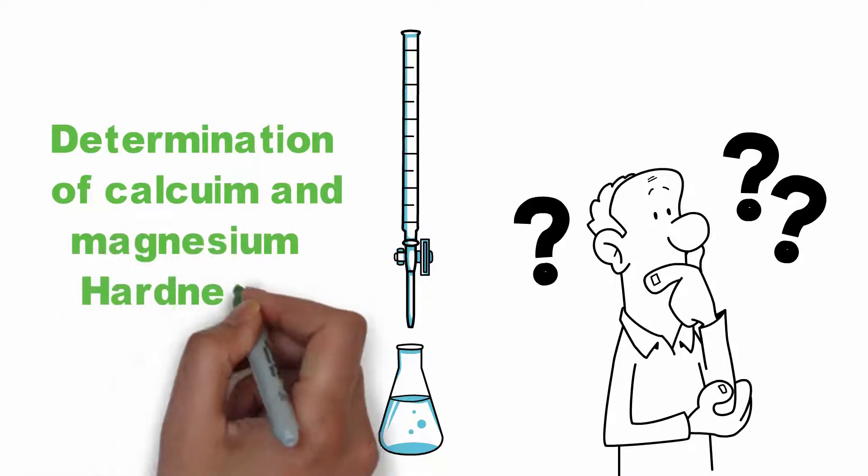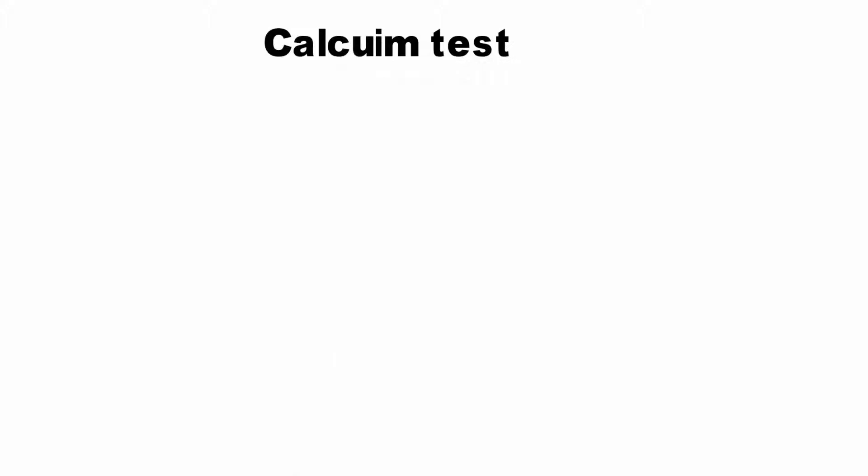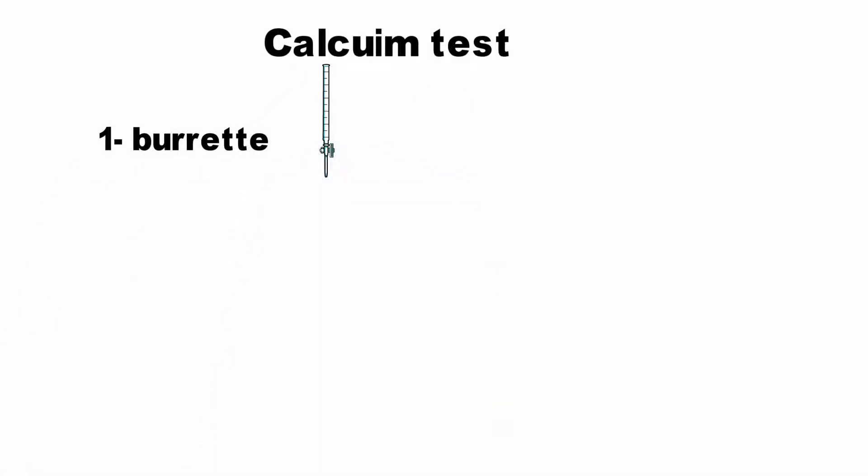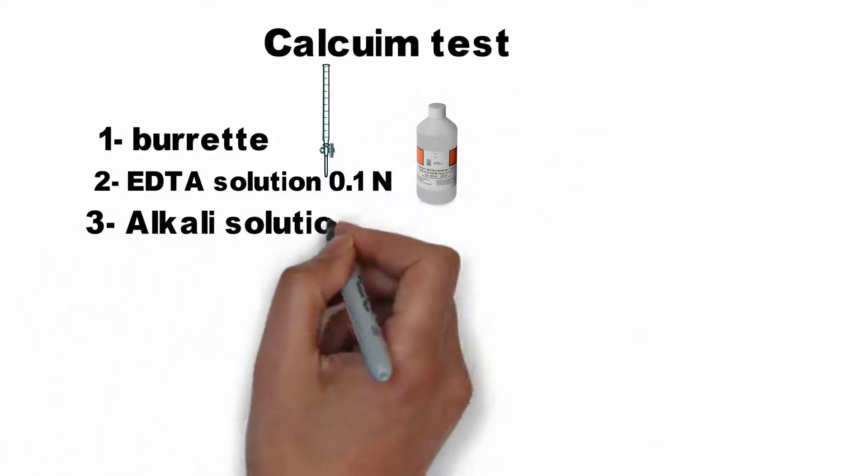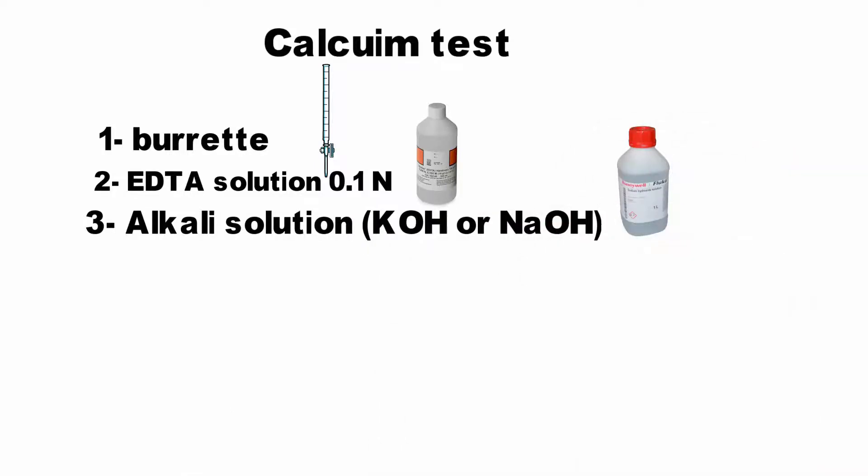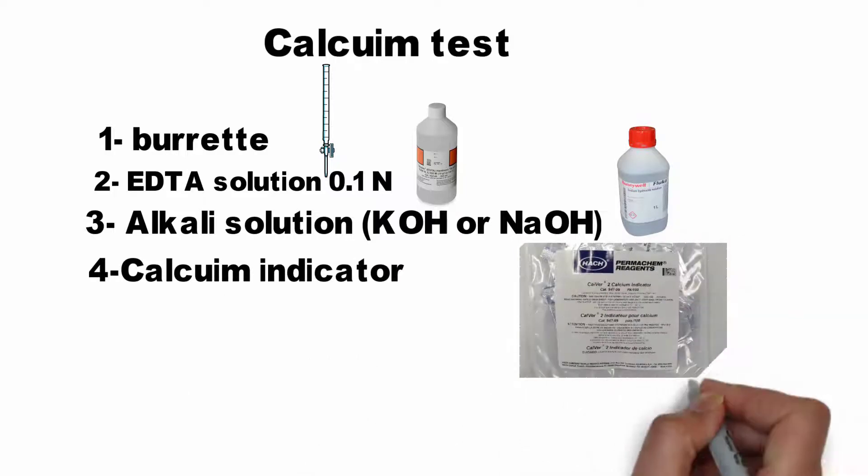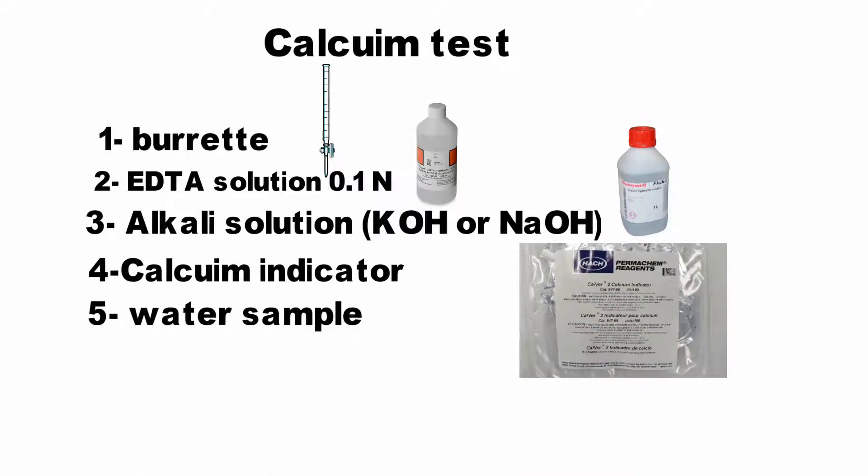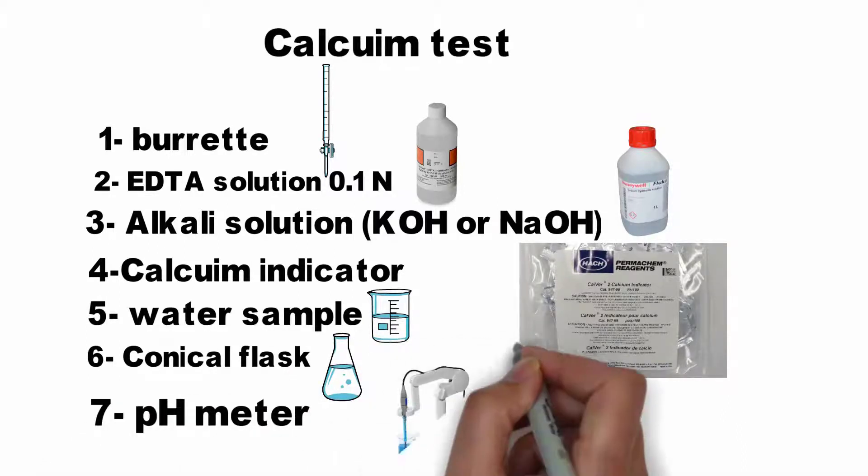To start the calcium test, you will need a burette, an EDTA solution 0.1 normal, an alkali solution (potassium hydroxide or sodium hydroxide) to raise the pH from 12 to 13 as a condition for this test, hydroxyl naphthol blue disodium or a calcium indicator, a water sample, a conical flask, and a pH meter.